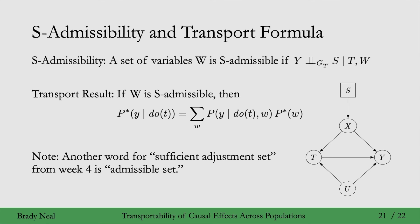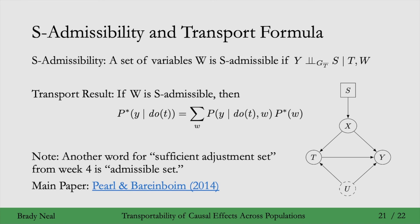In our example graph, x is an s-admissible set: y is d-separated from s when we condition on x in the graph with incoming edges to t removed. So x is an admissible set for this selection diagram. This all comes from a paper by Pearl and Bareinboim in 2014.